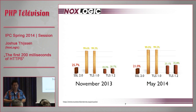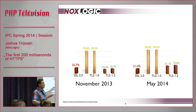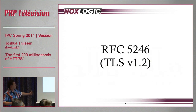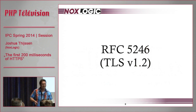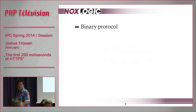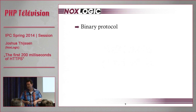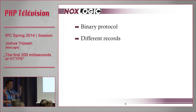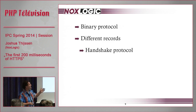Today I'm going to talk about TLS 1.2, the latest version. TLS 1.2 is a binary protocol - it doesn't work the same way as HTTP where you can just sniff the wire and see what's going on. It works with different so-called records, and the most important for us is the handshake protocol. There's also the alert protocol, change cipher spec, and application protocol.